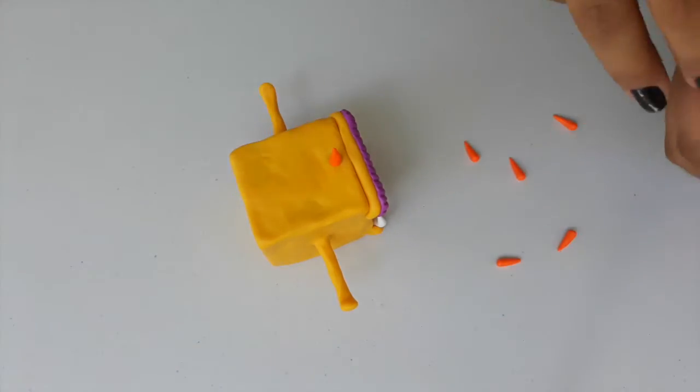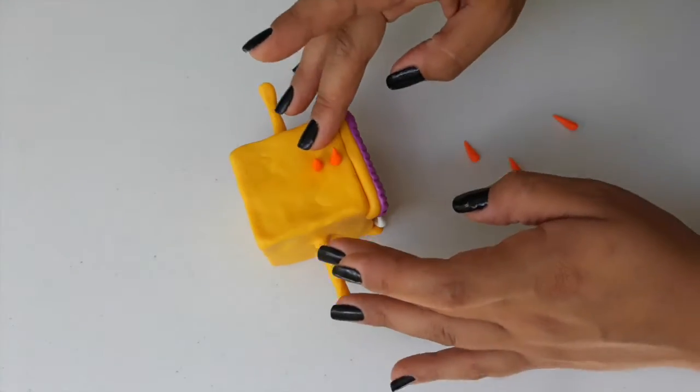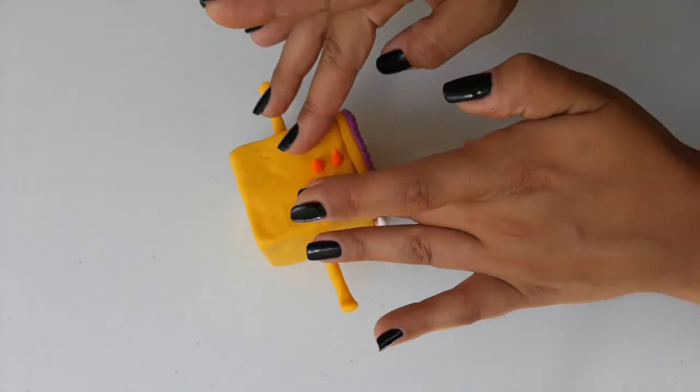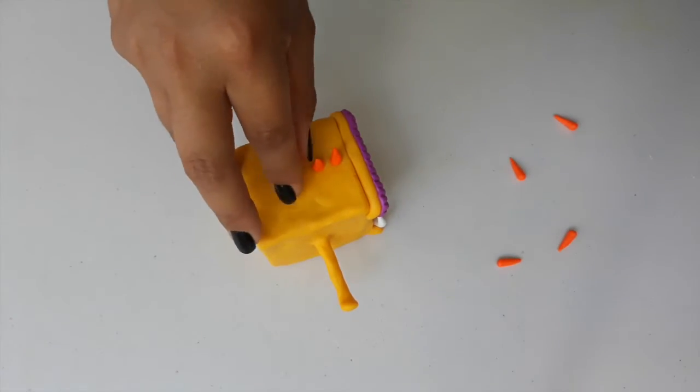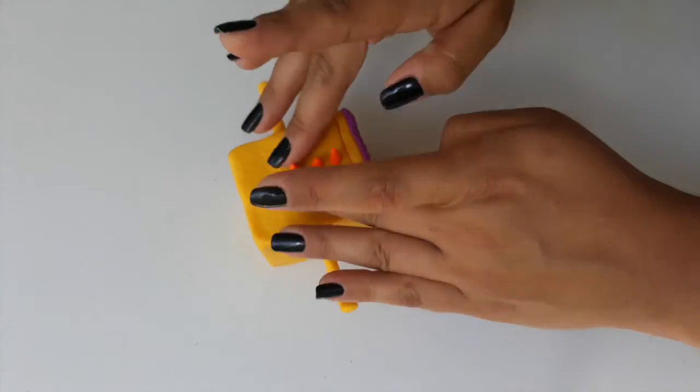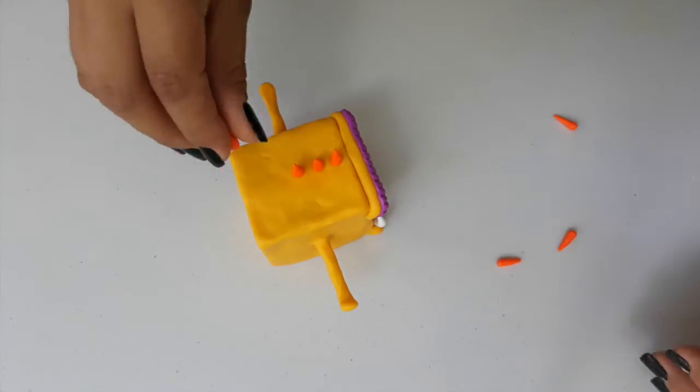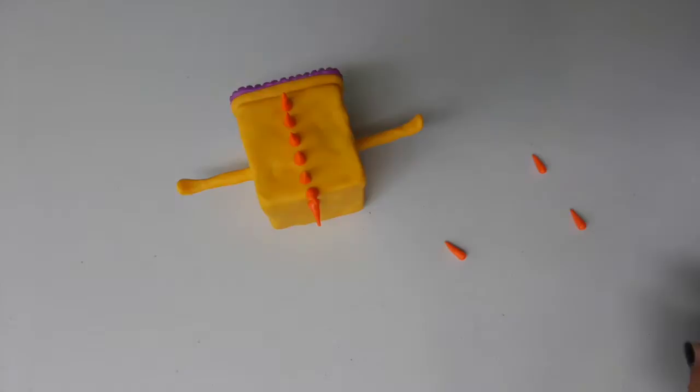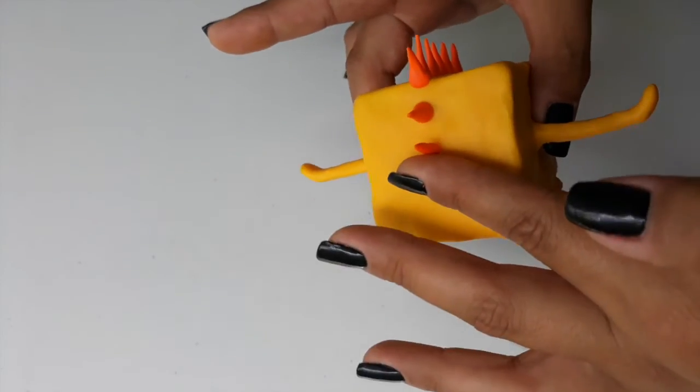And now for Monster Brother's punk rock mohawk. Choose which color of clay you'd like to use and roll about ten small cones. Place each small cone in a row down the middle of Monster Brother's head and continuing down his back.